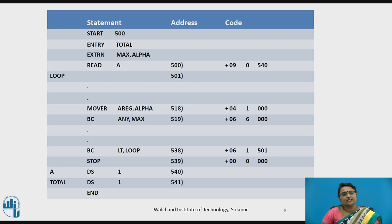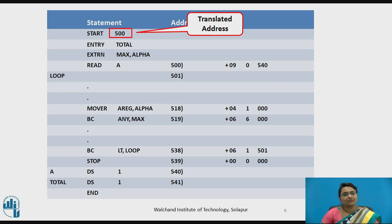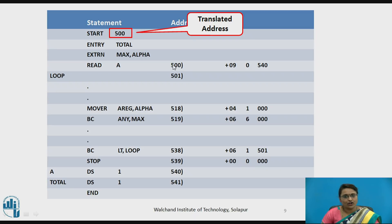Let us see an example. This is an assembler source program and its corresponding target program with generated addresses. The START 500 statement acts as an origin, specifying the location counter address as 500. So 500 is the translated address — the translator takes 500 as the translated origin. Accordingly, program addresses are assigned from this point and increment as we go through the program.